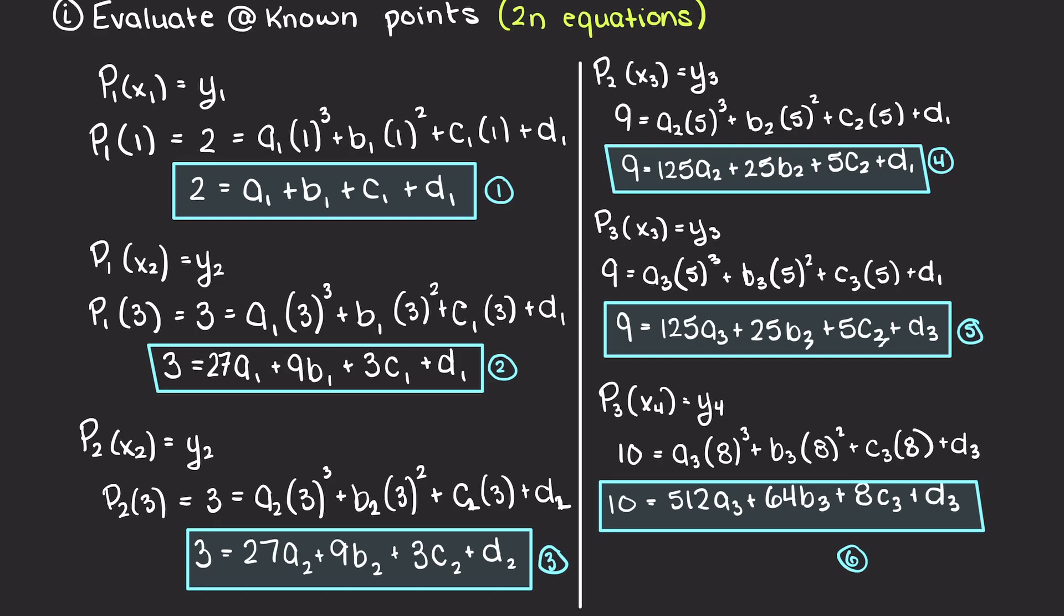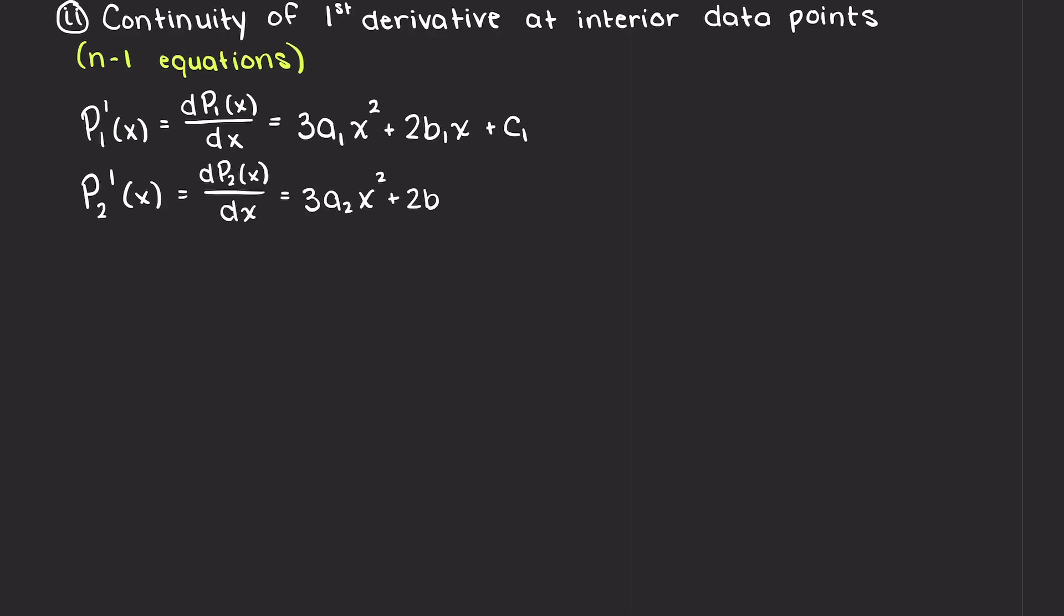As you can see here, this results in 6 of our 12 equations. Secondly, again as we learned in the cubic spline interpolation theory video, we can find n-1 equations through the property of smoothness at our interior data points through equating our first derivatives. Which, in this example, will give us two more equations as we have two interior data points.